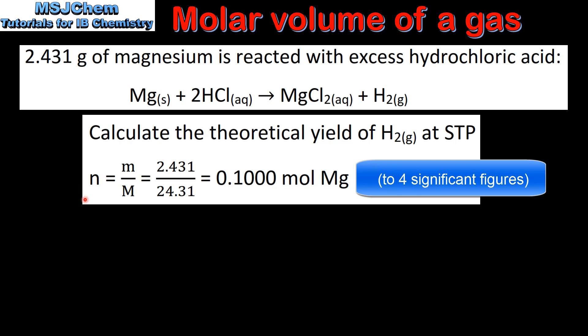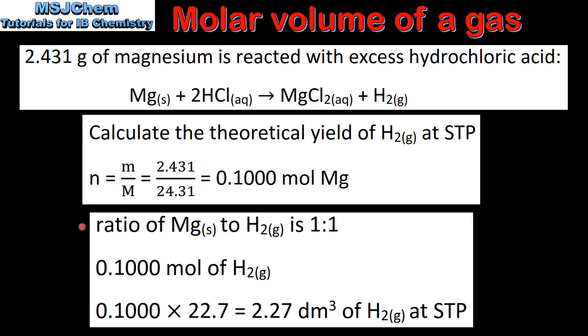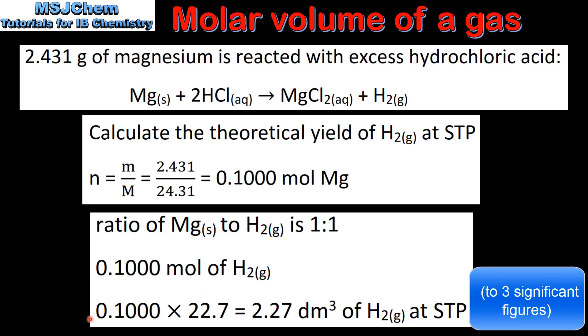So first we'll calculate the number of moles of magnesium using this equation. Next we look at the ratio of magnesium to hydrogen gas, and as we can see from the balanced equation, it's a one to one ratio. Because magnesium is the limiting reactant, we will produce the same number of moles of hydrogen gas. And finally we multiply the amount in moles by the molar volume of a gas, and this gives us 2.27 decimeters cubed of hydrogen gas at STP.